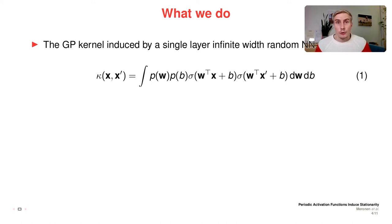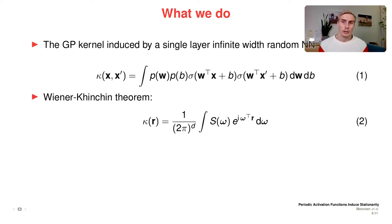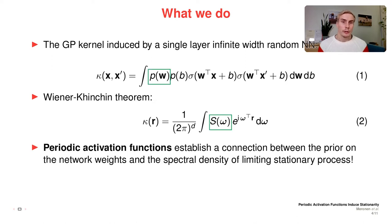The connection from the Gaussian process kernel to the activation function of a single layer infinite width random neural network is generally quite well understood. This formula shows the covariance function is fully defined based on the neural network activation function sigma and the priors on the neural network weights and biases. For a stationarity inducing covariance function, there is an equivalence to the spectral density of a stationary process. The Fourier duality between the covariance and spectral density is described by the Wiener-Kinchin theorem shown here in the second equation. We show that periodic activation functions establish a connection between the prior on the network weights and the spectral density of the limiting stationary process.